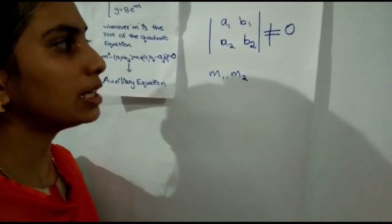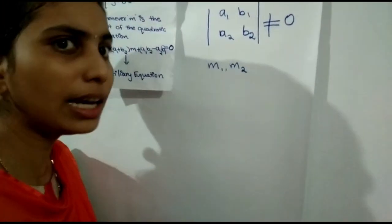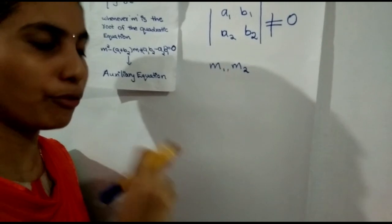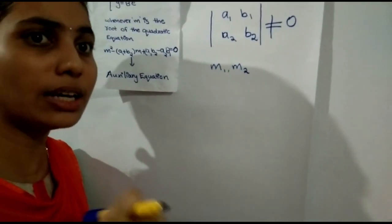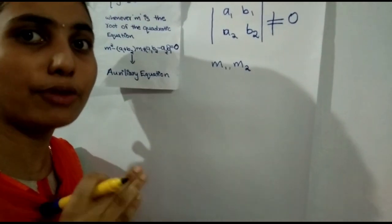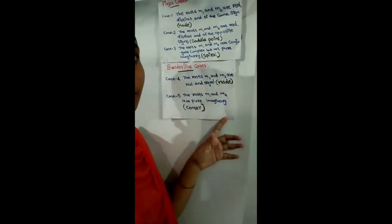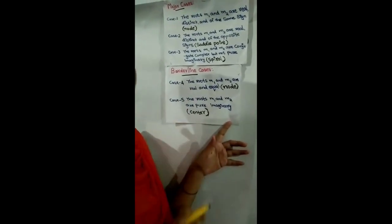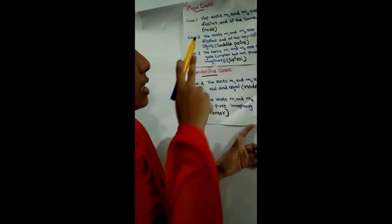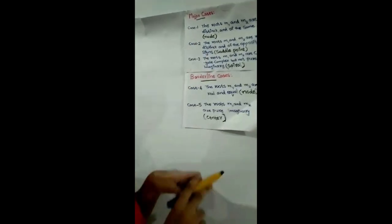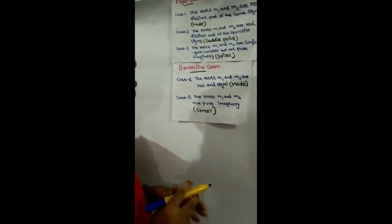Since the determinant is not equal to 0, zero is not a root of the auxiliary equation. Let m1 and m2 be the roots of m² − (a1 + b2)m + (a1b2 − a2b1) = 0. The nature of the critical point (0,0) is determined by the nature of m1 and m2. According as m1 and m2 are real and distinct, real and equal, or conjugate complex, we consider 5 cases — 3 major cases and 2 borderline cases. Case 1: the roots m1 and m2 are real, distinct, and of the same sign; then the critical point is a node.